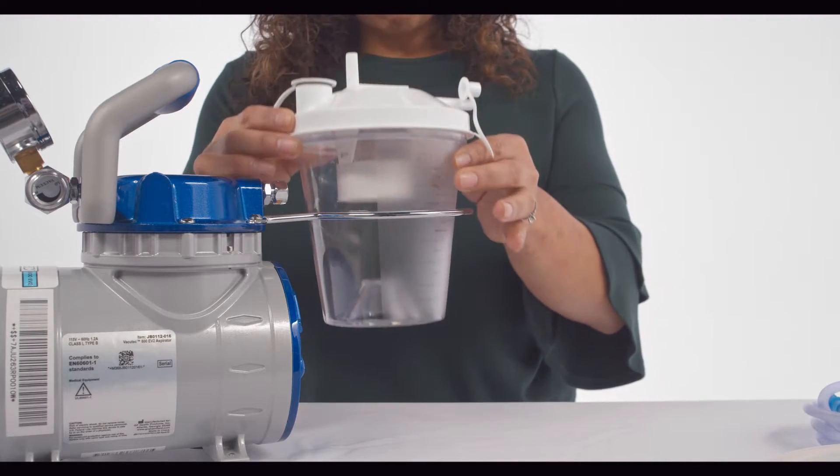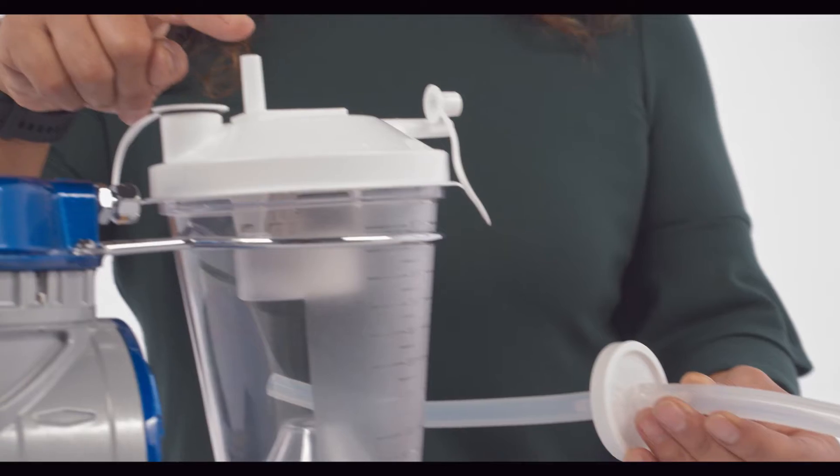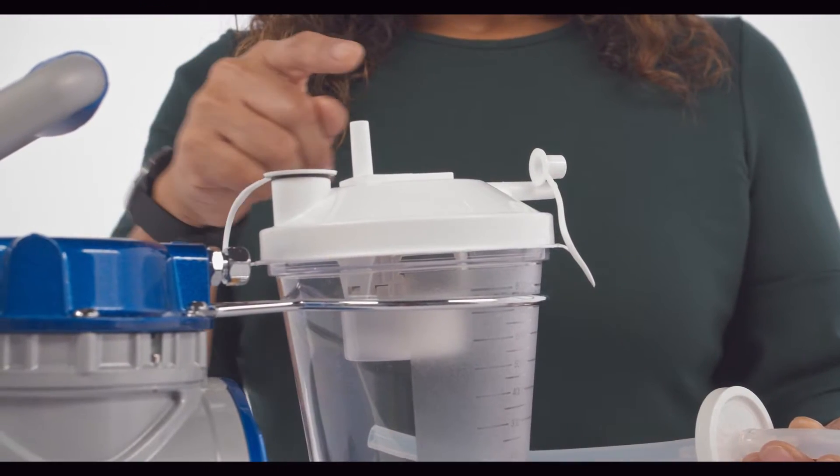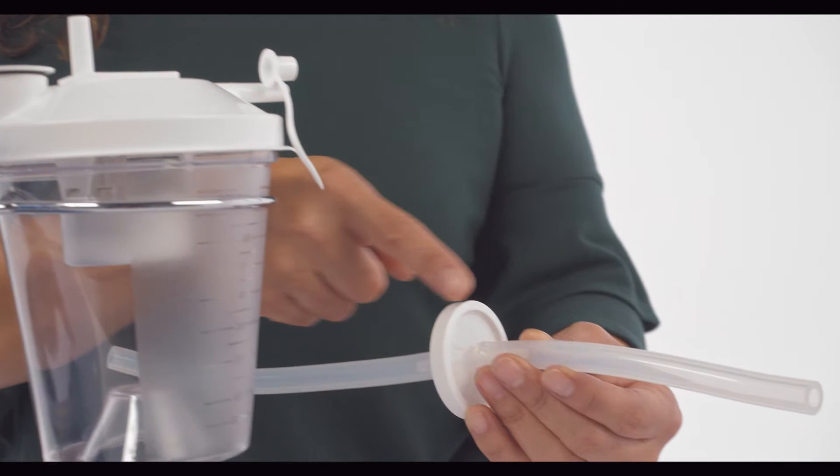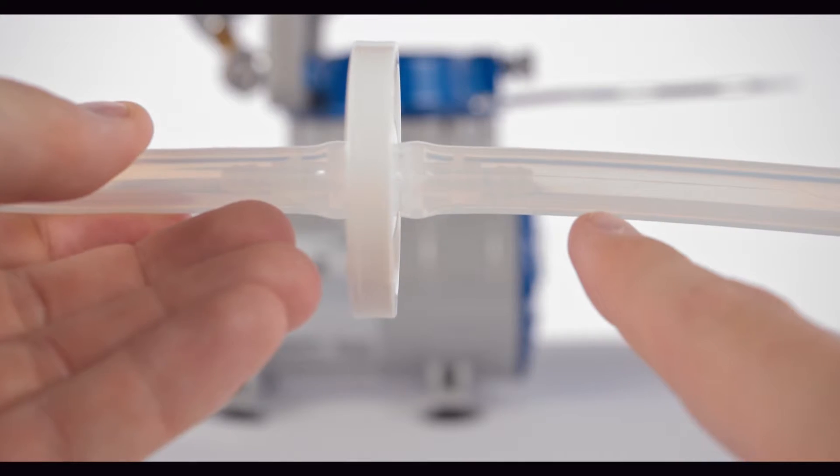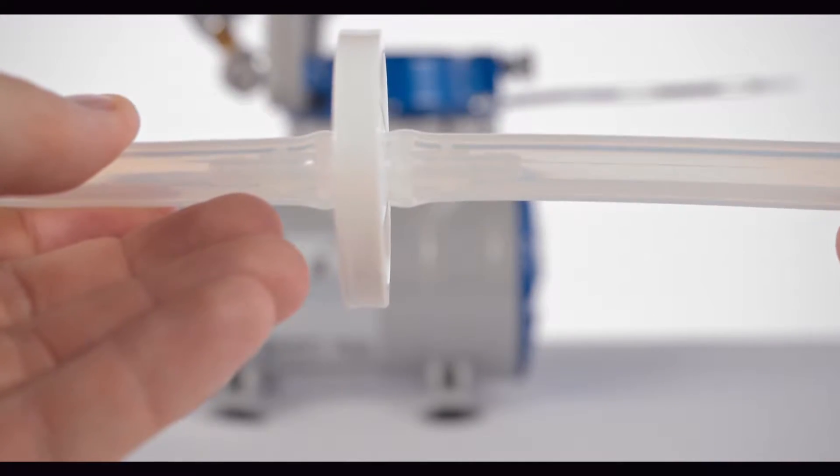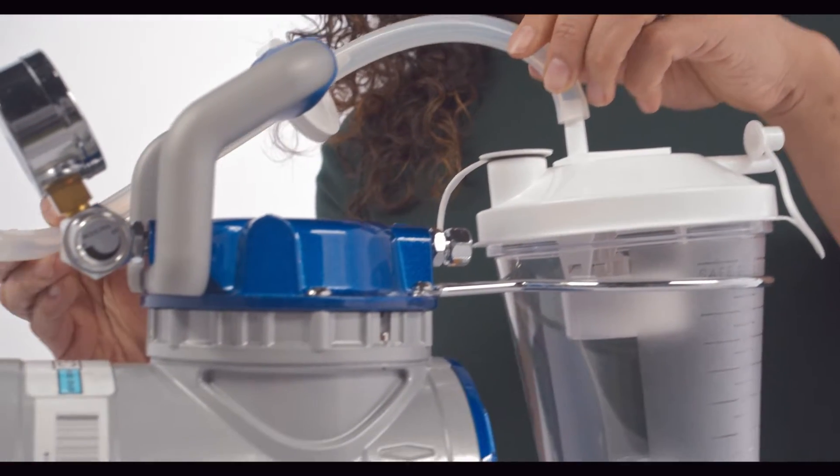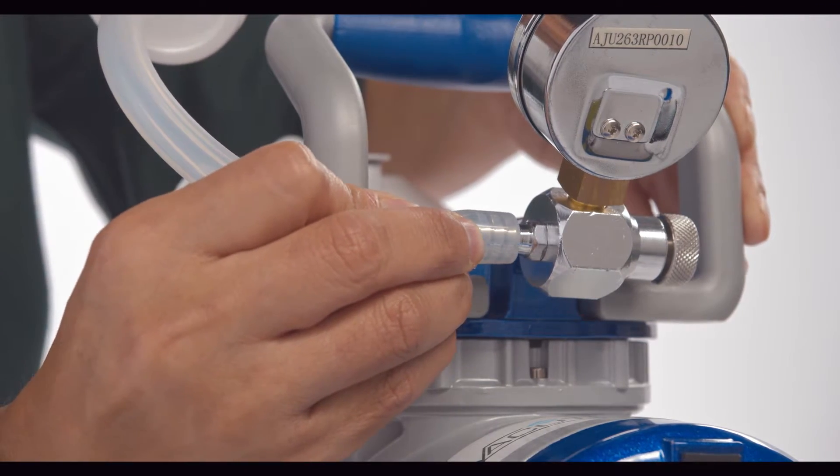The collection bottle will fit in the bottle holder attached to the aspirator. The opening or connector at the top is going to connect to the unit tubing that holds the HEPA filter, which allows the unit to suction and prevents particles from backflowing into the compressor. One end of the tubing will connect to the top of the canister, and the other will connect to the suction machine.